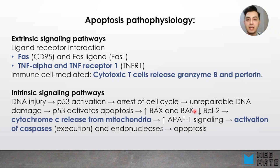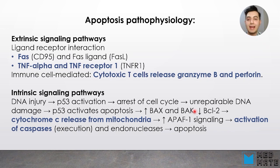Apoptosis can happen through two pathways. The first is the extrinsic signaling pathway, which happens outside the cell via ligand-receptor interaction — for example, FAS/CD95 and FAS ligand (FAS-L), or TNF-alpha and TNF receptor 1 (TNFR1). This signaling pathway is immune cell mediated: cytotoxic T cells release granzyme B, which enters the cell via perforin. Perforin makes pores in our membrane, allowing granzyme B to get inside and activate caspases, causing apoptosis.